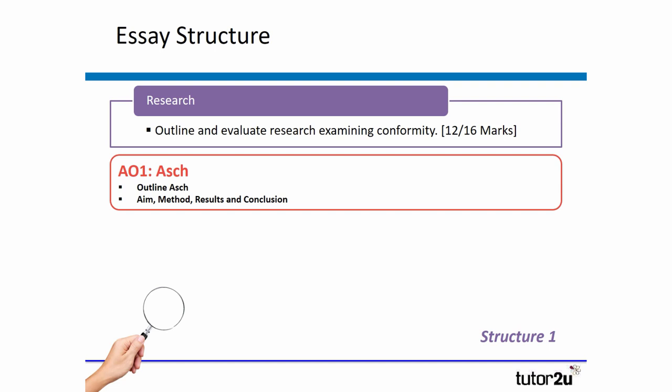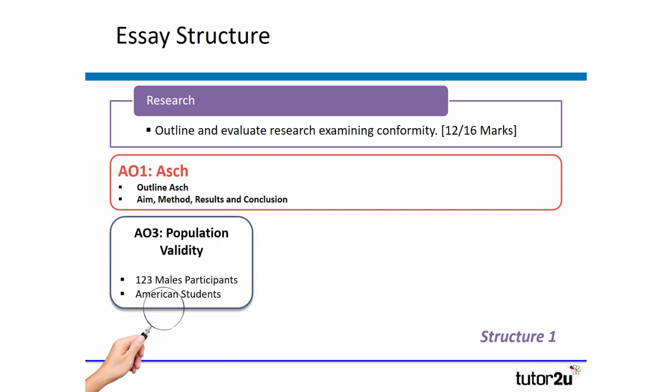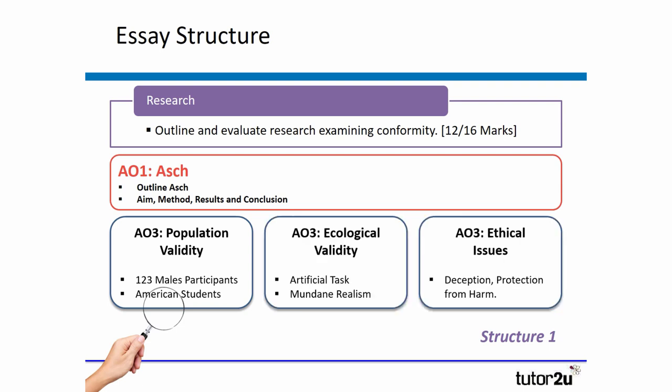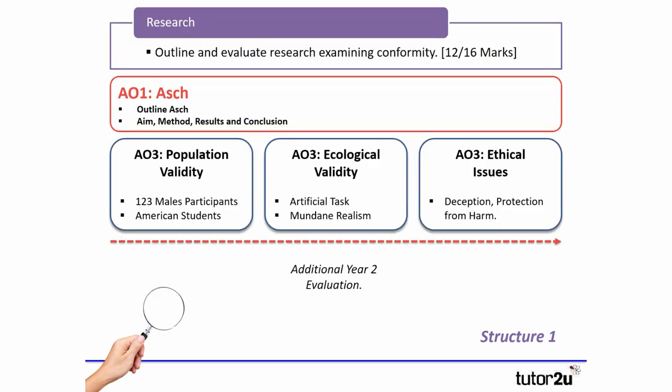If it was a year one essay, I would bring in three separate evaluation paragraphs. I would talk about population validity, ecological validity, and ethical issues, keeping those same three paragraph topics throughout.